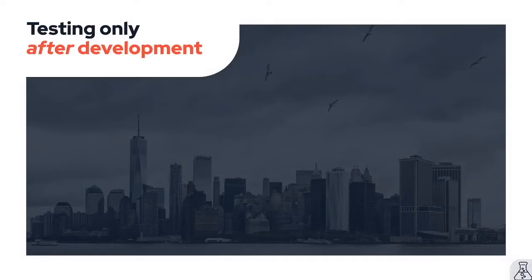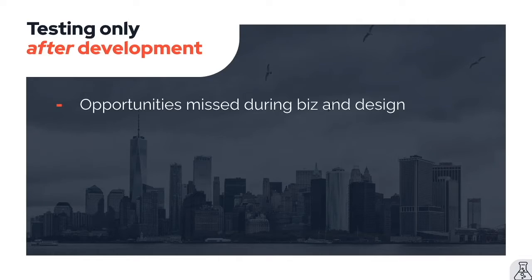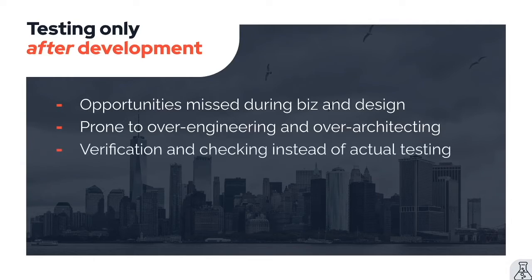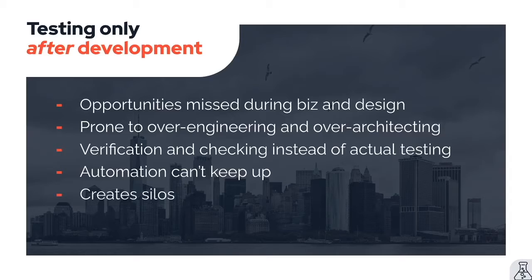The second mistake is testing only after development. So many opportunities are missed during business and design discussions. This leads to over-engineering and over-architecting — wanting to design and diagram everything up front instead of testing, experimenting, and using concrete scenarios to drive it. Testing becomes shallow verification and checking instead of actual testing. Automation can't keep up because everything is reactive, silos are naturally built, and the overall approach isn't productive or efficient for the people or the system.